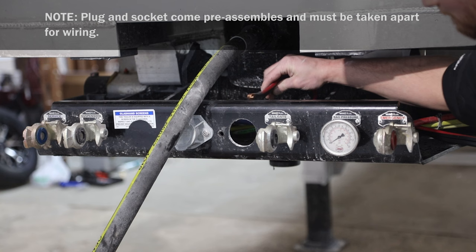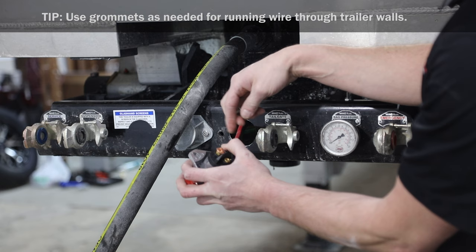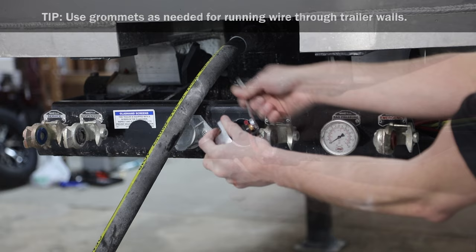Remove terminal bolts and lock washers from back of socket. Strip wire insulation off as needed to connect terminal rings to wire ends, and seal with heat shrink tubes, then reattach terminal bolts to secure rings to appropriate terminals.